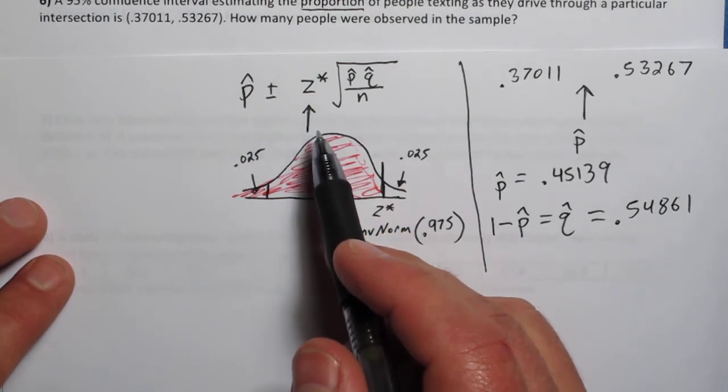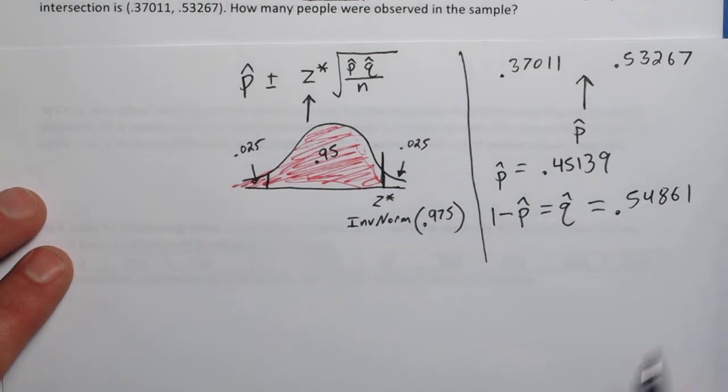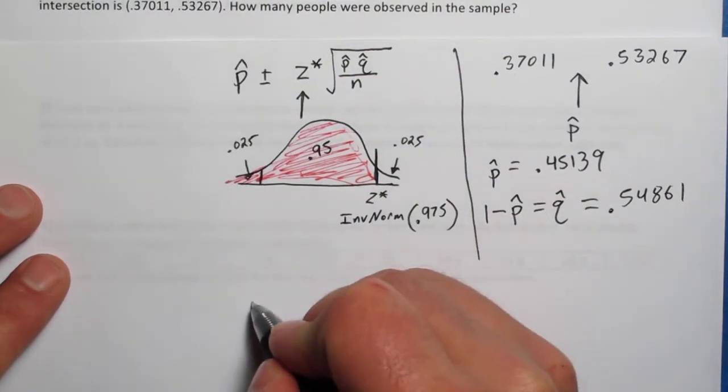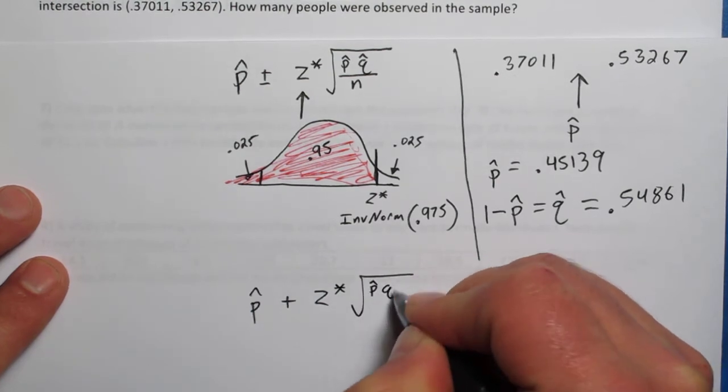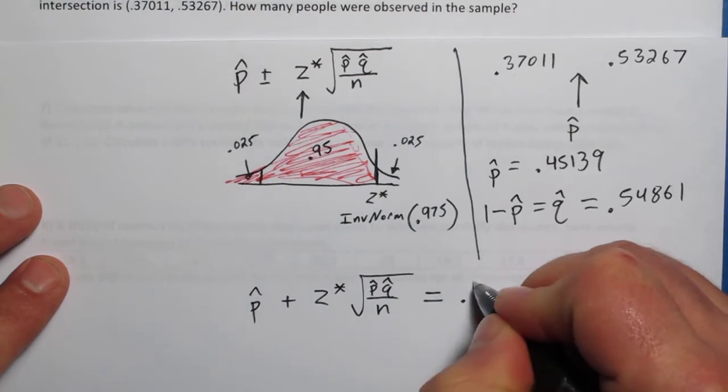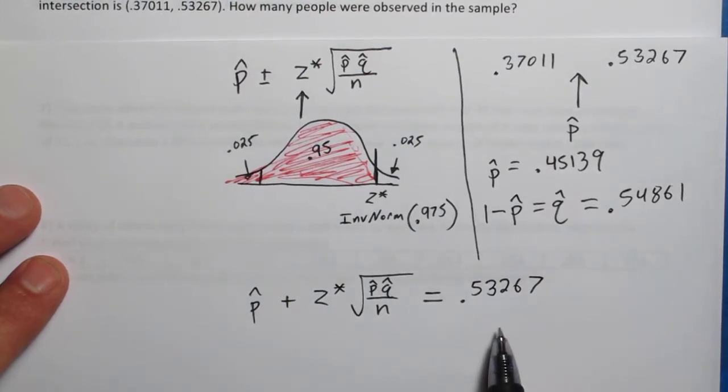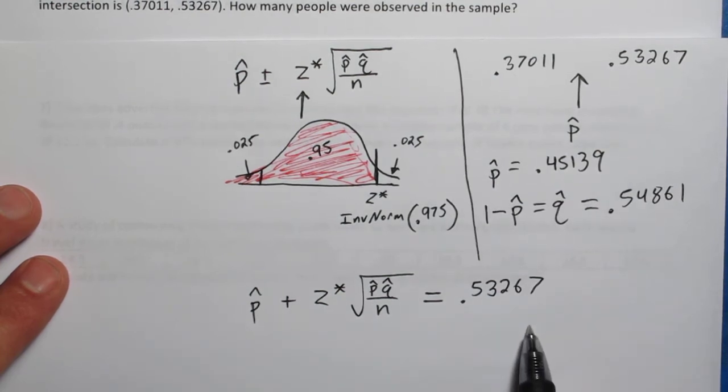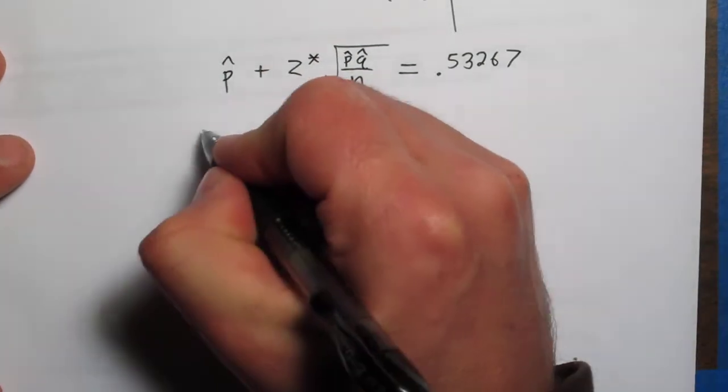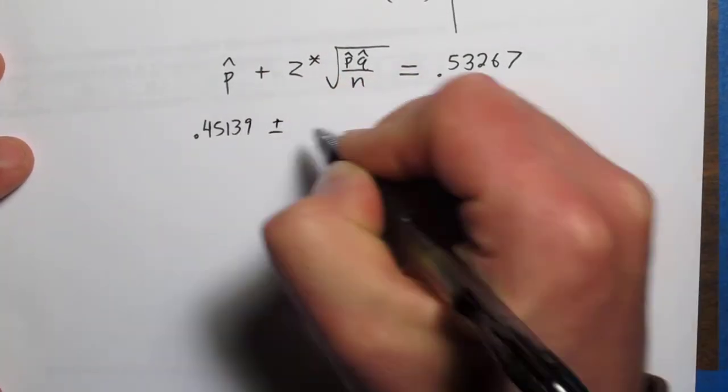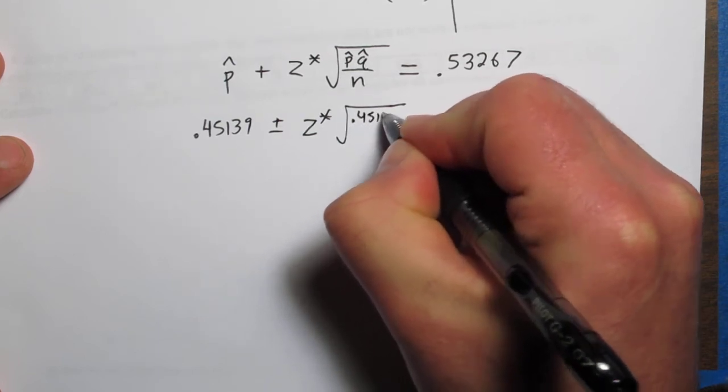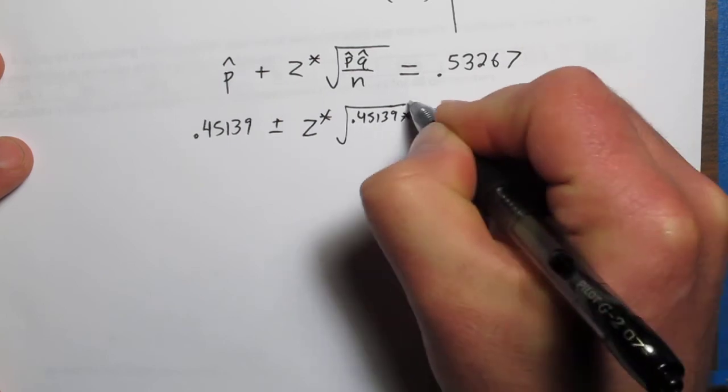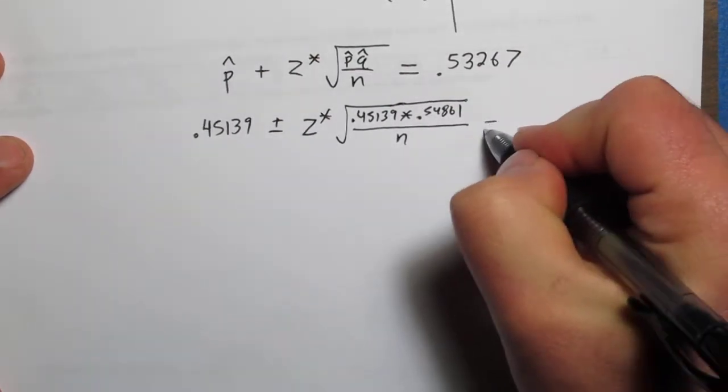So going back to here, we're trying to figure out what n is. Let's focus on the p hat plus. p hat, instead of plus or minus, let's just do p hat plus z star times the square root of p hat q hat over n has to equal 0.53267. This is the upper limit of our confidence interval. And that's what the plus does. It gives you the upper limit of the confidence interval, while the minus in the plus or minus would give us the lower limit. So we're going to solve this for n. If we substitute everything in, we have 0.45139 plus z star, which is stored on our calculator, divided by the square root of 0.45139 times 0.54861, all over n equals this.